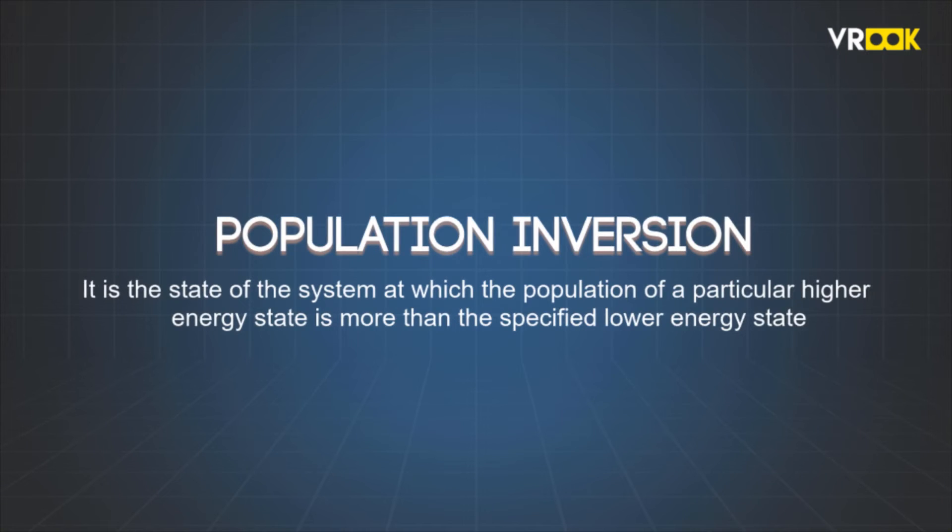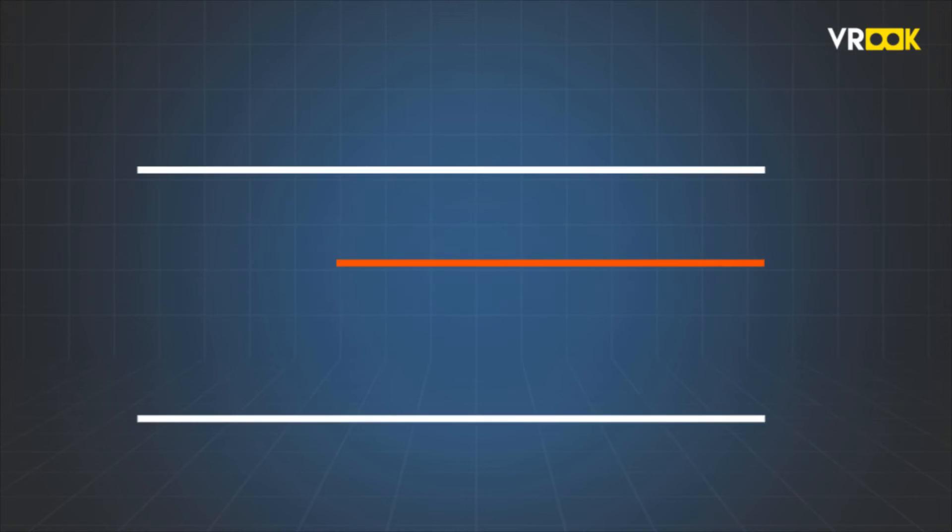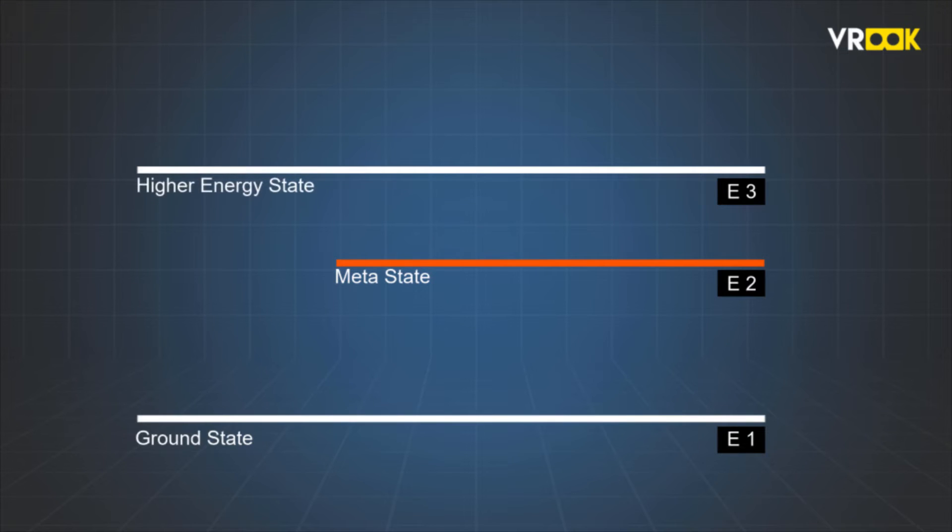It is the state of the system at which the population of a particular higher energy state is more than the specified lower energy state. To understand population inversion, let us consider three energy states of an atom such as E1, E2, and E3. E1 is the ground state, E2 is the metastate, and E3 is the higher energy state. So E3 is greater than E2 and E1.